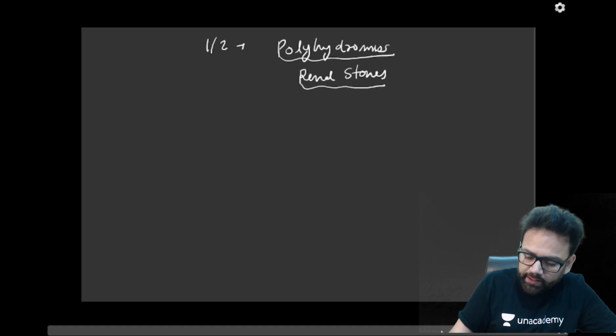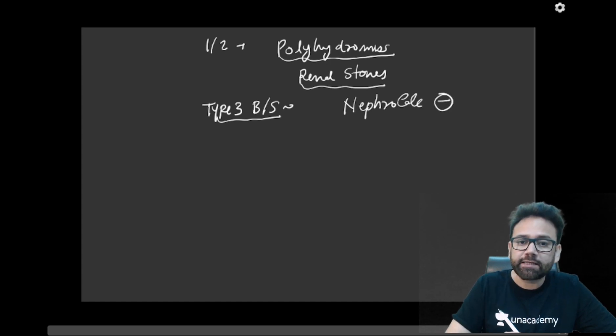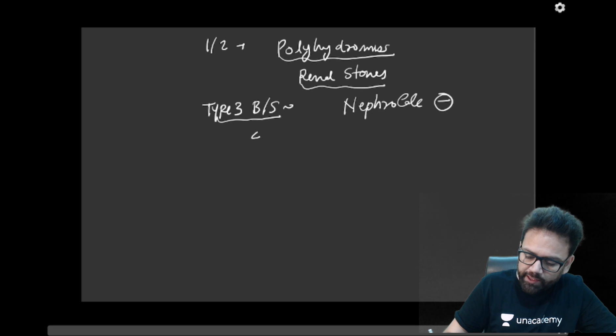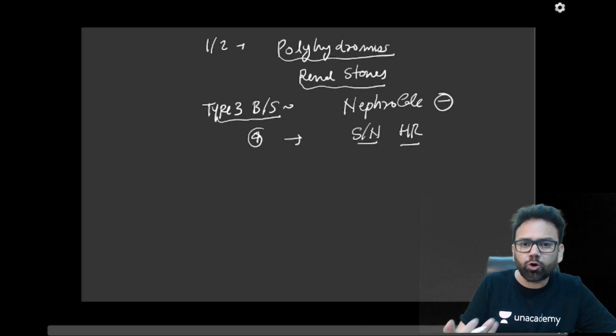But one thing should be kept in mind that in type 3 Bartter syndrome, what we usually call as classical Bartter syndrome, nephrocalcinosis is very rarely formed. So you can say that nephrocalcinosis is absent. And type 4 we have already discussed. It is accompanied by sensorineural hearing loss. So we can just summarize all these things together.